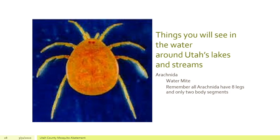Another thing we talked a little bit about is the arachnids. But this is what they call a water mite. It's very red and it looks just like this. Remember, all arachnids have their eight legs — you can see the eight legs very clearly here, with two body segments. The cephalothorax you can't see; what you're seeing in the big round part is the abdomen.